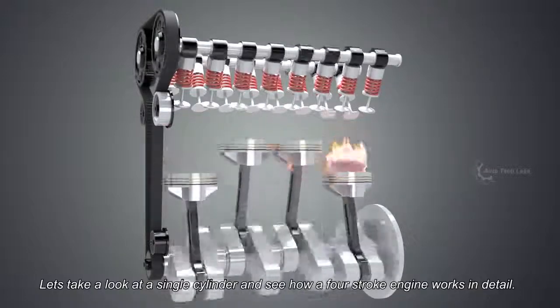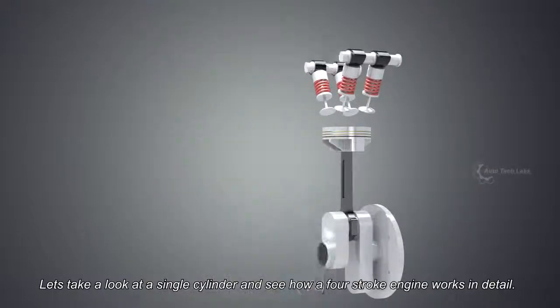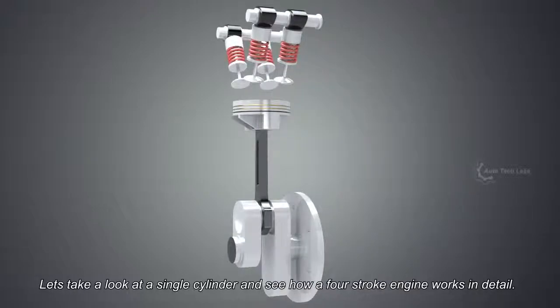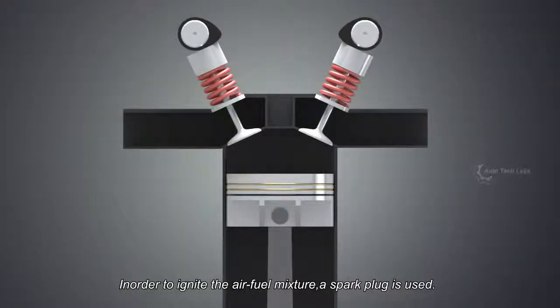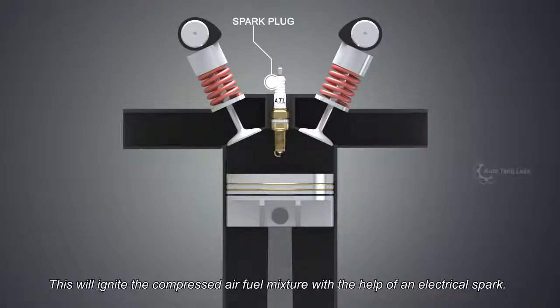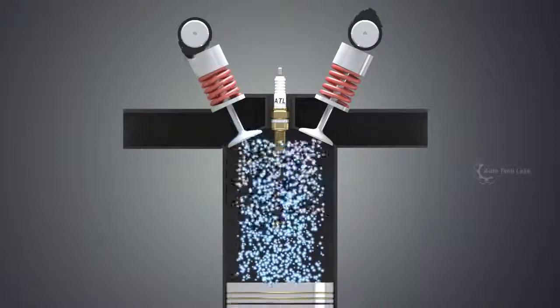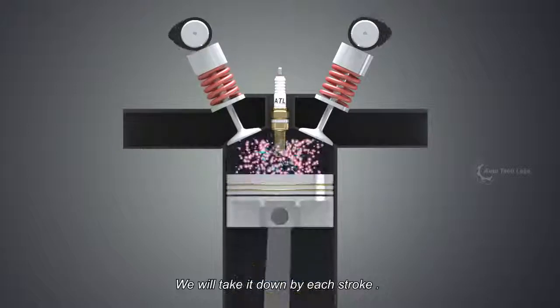Let's take a look at a single cylinder and see how a 4-stroke engine works in detail. In order to ignite the air fuel mixture, a spark plug is used. This will ignite the compressed air fuel mixture with the help of an electrical spark. We will take it down by each stroke.